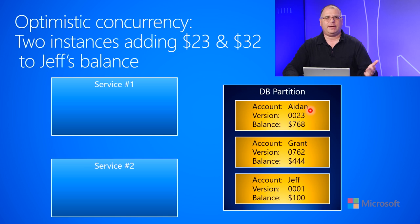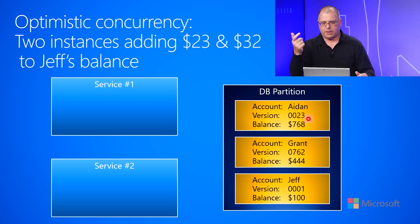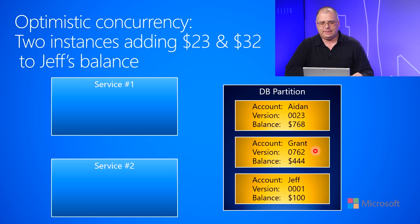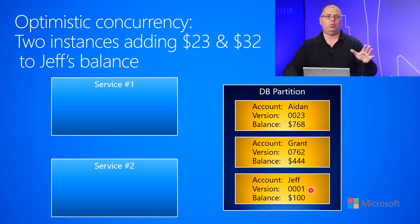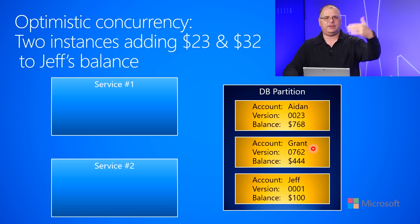There's an account for someone named Aiden, and the current version of the information about Aiden is version 23 — we could also say the e-tag is 23 — and Aiden's balance is $768. Grant is another person with a bank account of $444, and the version or e-tag of it is 0762. Down at the bottom, we have Jeff's bank account. It has only $100 in it and it's at version 1 because Jeff just opened his account, so this is the first thing that has happened. We're going to focus on Jeff's bank account.